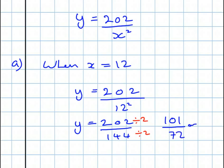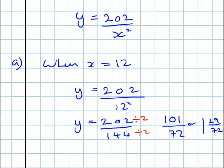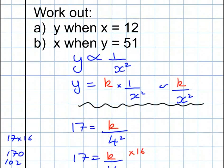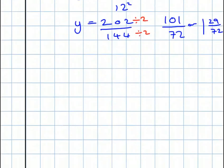Or, it's an improper fraction. 72 goes into 101 once. Remain to 29. So it's 29 over 72. Of course, you could have answered that as a decimal. Now, the last one, the last part of this video is, what is X when Y is 51?